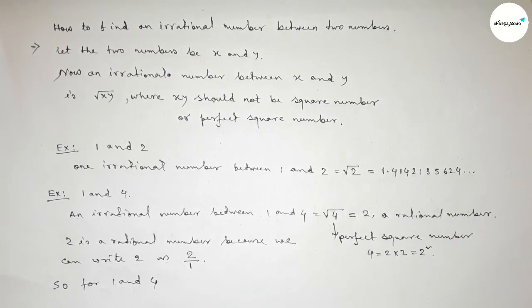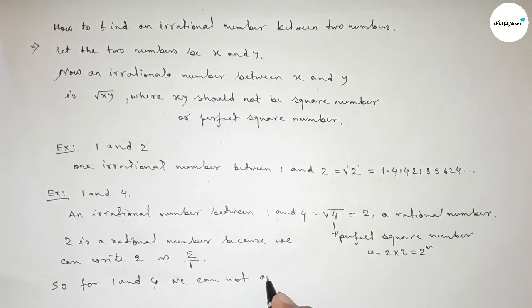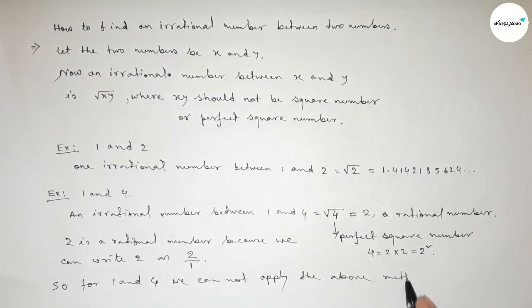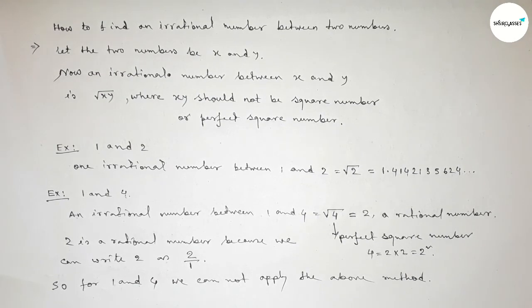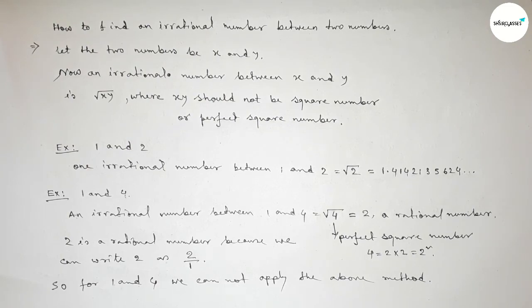So for 1 and 4 we cannot apply the above method to find out an irrational number. So we will learn how to find out an irrational number between 1 and 4 in the second part video. So that's all, thanks for watching.